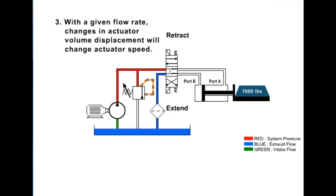Principle 3: With a given flow rate, changes in actuator volume displacement will change actuator speed. With less volume to displace, the actuator will cycle faster. For example, there is less volume to displace when we retract because the cylinder rod occupies space, diminishing the volume to be displaced. Notice the difference in speed between extend and retract.